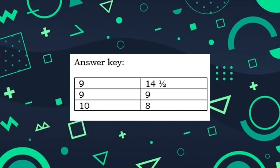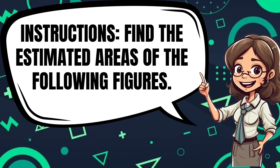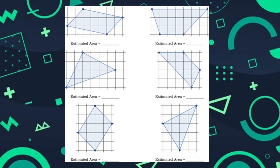We have the answer key. Now find the estimated areas of the following figures: the parallelogram, triangle, and trapezoid. The process is the same — count the squares first, then multiply: multiply by one, multiply by one, multiply by one-half, and the less than half filled is multiplied by zero. After multiplying, add the products and that would be the estimated area.